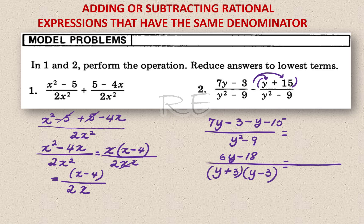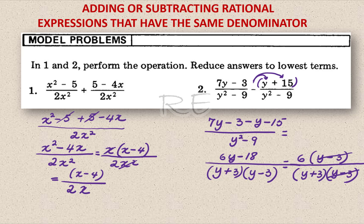We get, when we factor out 6, we have 6 times y minus 3 over y plus 3 times y minus 3. y minus 3 cancels, and the final answer is 6 over y plus 3.